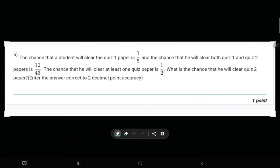Number 5 of week 7 stats graded assignment. We are given that the chance a student will clear quiz 1 paper is 1 by 5. The chance he will clear both quiz 1 and quiz 2 papers is 12 by 43. The chance that he will clear at least one quiz paper is 1 by 2. What is the chance that he will clear quiz 2 paper?